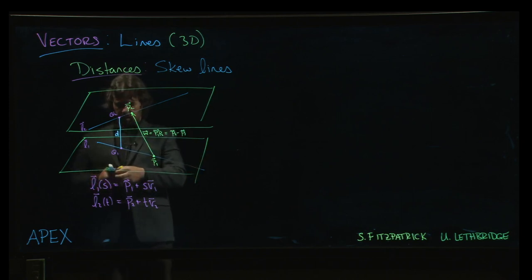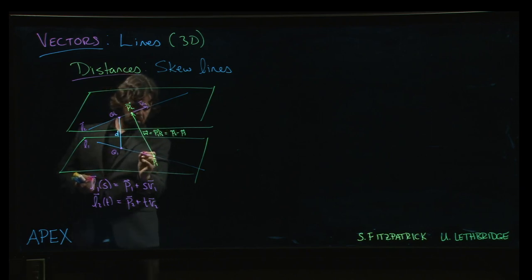How do we get the shortest one? Well, the other bit of info that we have for our lines is we have the direction vectors. We have V2, we have V1.